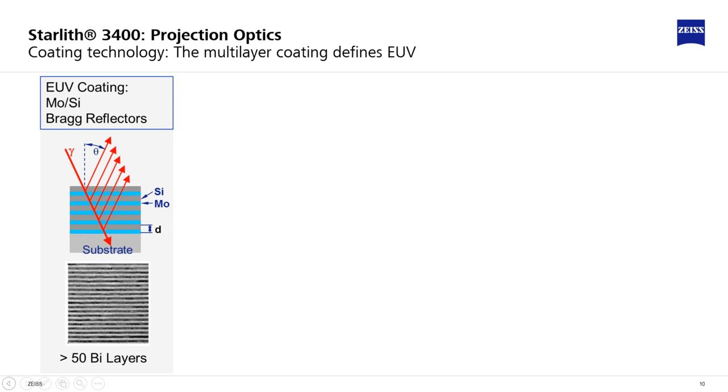After the polishing of the surface is finished, a multilayer coating is deposited onto the surface. The EUV coating is the only element that is interacting with the EUV light.